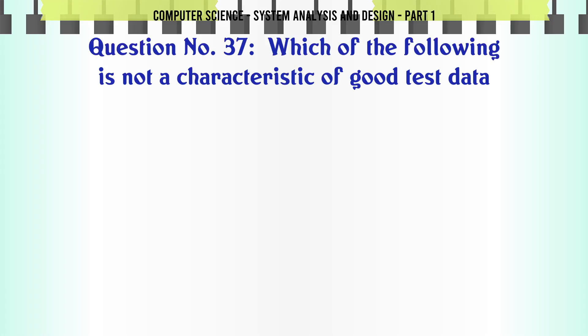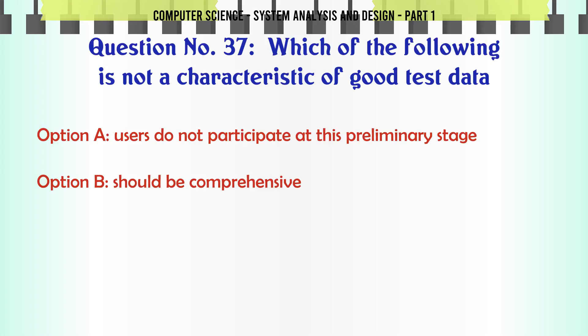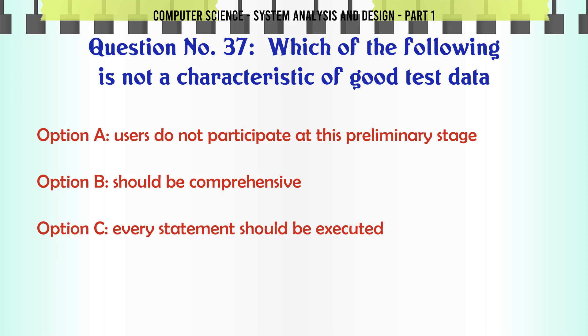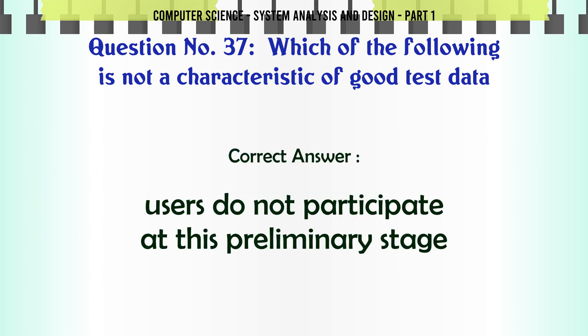Which of the following is not a characteristic of good test data? A. Users do not participate at this preliminary stage. B. Should be comprehensive. C. Every statement should be executed. D. All of the above. The correct answer is: Users do not participate at this preliminary stage.